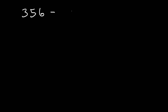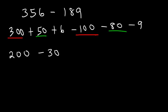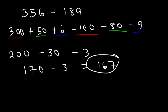Let's work on an example with three-digit numbers: 356 minus 189. Break down 356 into 300 plus 50 plus 6, and negative 189 is minus 100 minus 80 minus 9. 300 minus 100 is 200. 50 minus 80 is negative 30, since 5 minus 8 is negative 3. And 6 minus 9 is negative 3. 200 minus 30 is 170. 170 minus 3 is 167. That's the final answer.